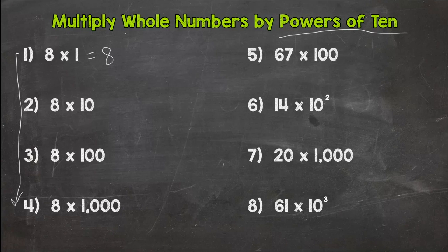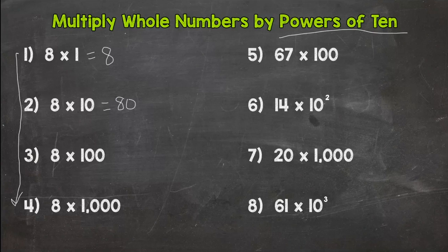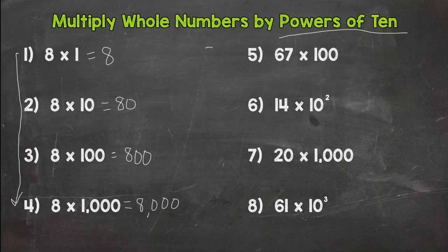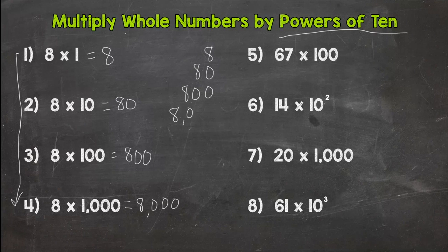Let's go to number two — 8 times 10 is 80. Then 8 times 100 is 800. And 8 times 1000 gives us 8000. I'm going to line all these answers up to the right, and I want you to take a look at where the 8 is placed as we go down through these answers.